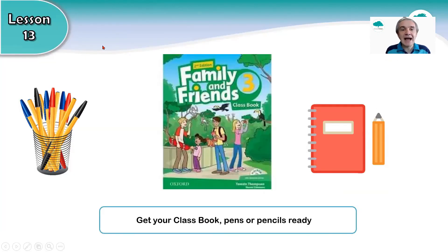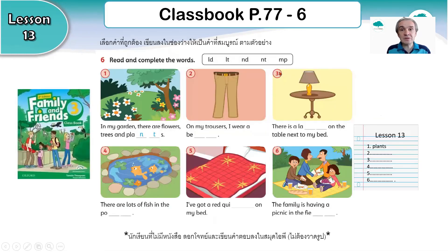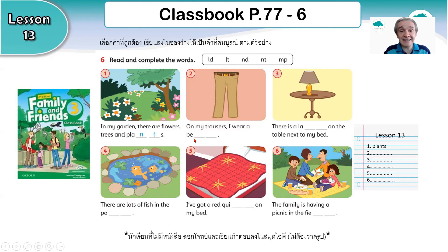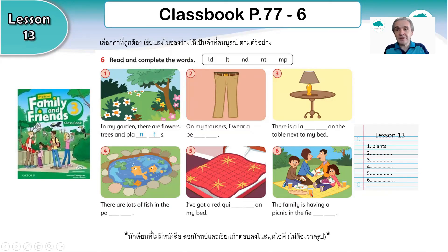Good luck with the two online activities today. Lastly, class book time. For this, we're going to look on page 77, exercise 6. What you need to do is write the correct spelling for each word. You can see 'plants' has been done already — NTS. So look at number two: on my trousers, I wear a... So that is the homework for today.